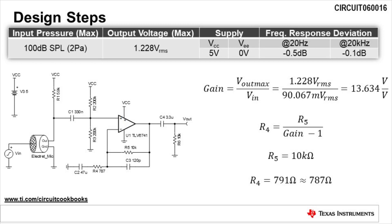Next we will calculate the gain required to produce a maximum output voltage swing. The gain is calculated as the maximum output voltage, Vout max, divided by the input voltage, Vn. We calculate the gain as 13.634 volts per volt. The gain is set with the feedback resistors R4 and R5 and is equal to 1 plus R5 over R4. Rearranging the equation to solve for R4, we see that R4 is equal to R5 divided by the gain minus 1. Selecting R5 as a 10 kilo ohm resistor, we calculate R4 as 791 ohms. Since 791 ohms is not a standard resistor value, we will use the next closest resistor value of 787 ohms as shown in the schematic.